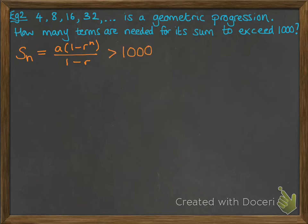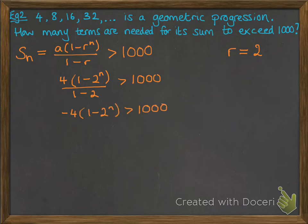If we apply this, we want it to be greater than 1,000. In this case our rate is 2 and our starting number A is 4. So we substitute those in and now we're going to solve that equation.